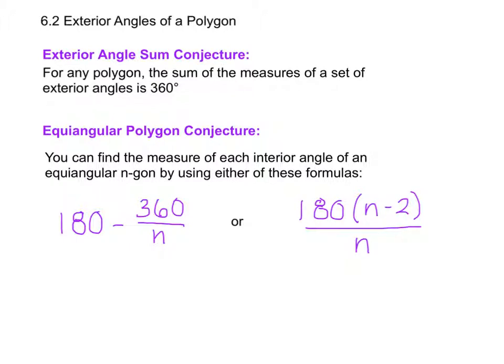Now we have some more conjectures about the exterior angles of a polygon. First we have the exterior angle sum conjecture, which says that for any polygon, whether a quadrilateral, pentagon, octagon, whatever, the sum of the measures of a set of exterior angles is 360 degrees. For example, if we have a pentagon over here, all of these exterior angles are going to add up to 360.